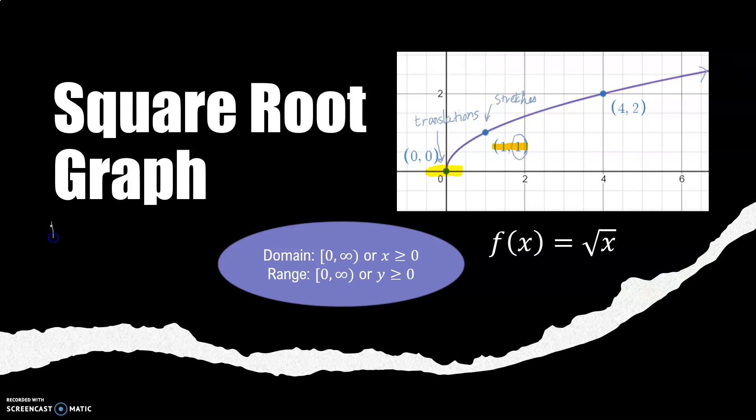The square root graph has no asymptote. It doesn't flatten out. It continues to rise towards infinity and this graph is always increasing.